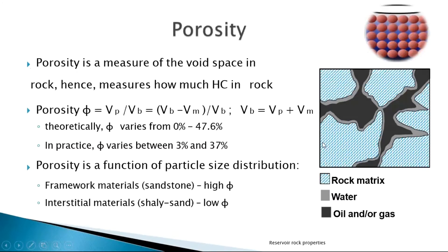In this picture we have the matrix — the green particles — and on the rock grain surface we can see some water sticking to it, and then we have oil and gas as the mobile phase. The bulk volume starts from this point to this point — the overall volume of everything. The pore volume is the volume occupied by the pore spaces.